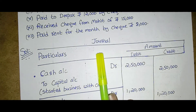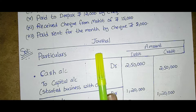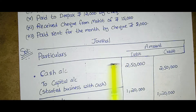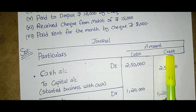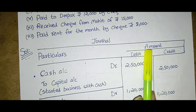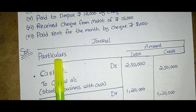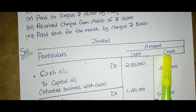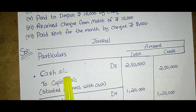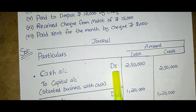The first step of the solution is preparing the journal. By definition, the journal is a book in which all entries are entered in a single platform. The journal table has: particulars, amount, debit, and credit. Based on the data given in the question, we are preparing the journal. First is the cash account — cash account Dr. to capital account — started business with cash.